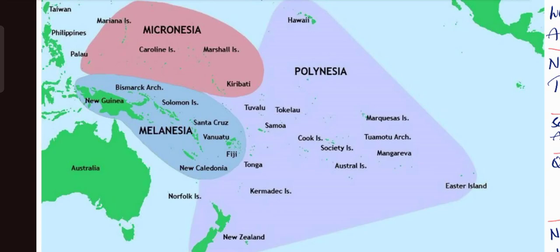So to summarize Polynesia: in the north is Hawaii Island, in the east is Easter Island, in the southwest are Norfolk Islands and New Zealand. Above those two are Tonga Islands and Kermadec Islands. At the center are Tuvalu, Tokelau, Samoa, Cook Islands, Society Islands, and Austral Islands. Further east are Marquesas Islands, Tuamotu Archipelago, and Mangareva. This completes Melanesia, Polynesia, and Micronesia.